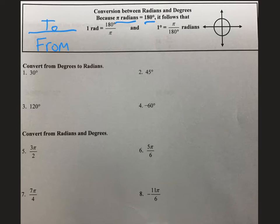So for our first example, we have 30 degrees. We are converting from degrees to radians. So looking up here, we have 180 degrees on the bottom and π radians on top. 30 goes into 180 six times. Our degrees cancels out and we are left with π divided by 6 radians.